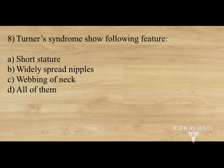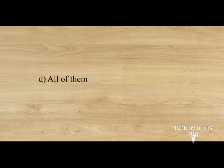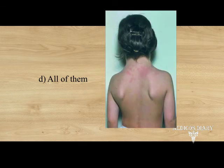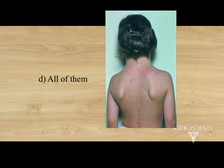Turner's syndrome shows which features? Option A. short stature, B. widely spread nipples, C. webbing of neck, D. all of them. Answer: option D, all of them. Patients are of short stature, the trunk is muscular, the neck is short and webbed, and the breast is not developed with nipples placed far apart. In Turner's syndrome there are 44 autosomes plus only one sex chromosome.